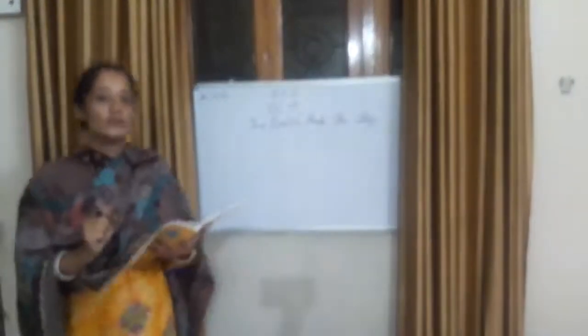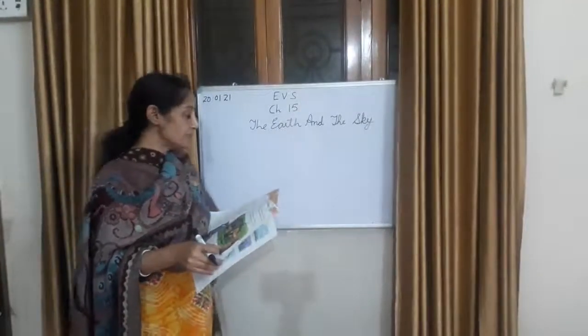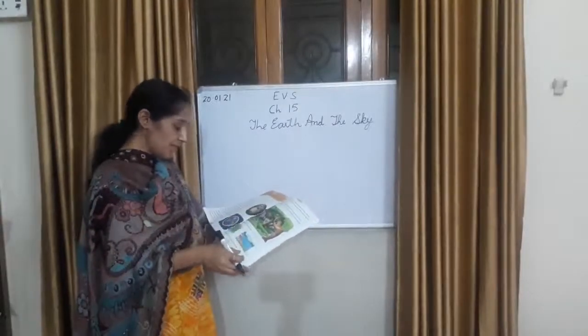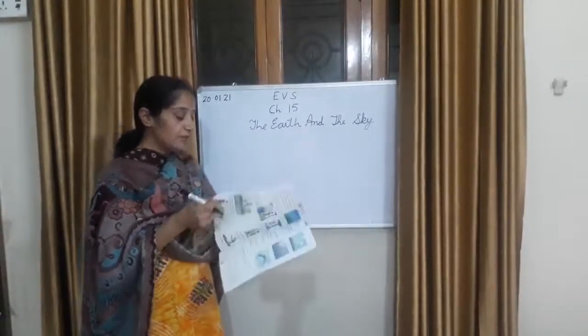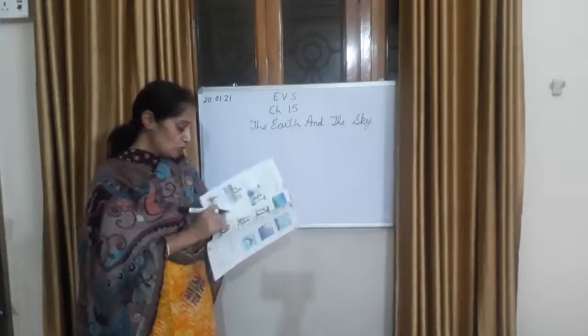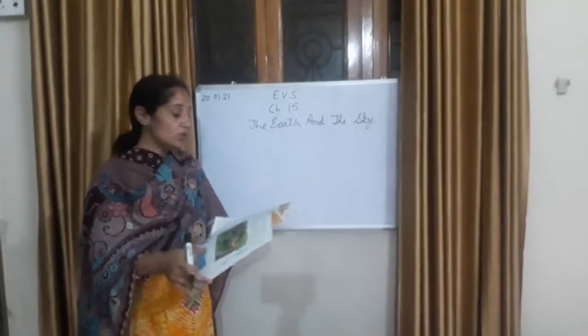Good morning dear students. This is your EVS class and today we will do chapter 15, Earth and the Sky. Children, page 110 and 111 we have done reading and explanation of this chapter. Today we will do 112 and 113. Open your EVS book and be ready.